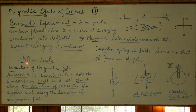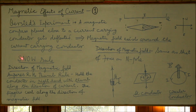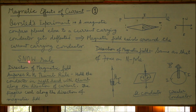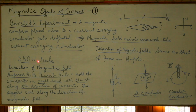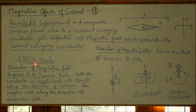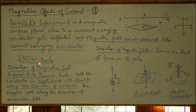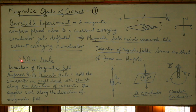The direction of deflection of the magnetic compass can be predicted using the SNOW rule. The first two letters S and N indicate the direction of current. The third letter O indicates the position of the conductor with respect to the compass, and the last letter W indicates the direction of deflection of the north pole.